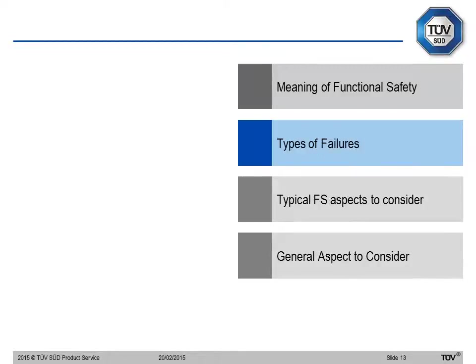So that was a warm-up covering why functional safety is important and what we are trying to achieve. We go now into the core of the webinar, which is looking at types of failures. We will see some examples of medical devices and how we apply functional safety — it's just an example, but the concept is applicable to other medical devices as well.